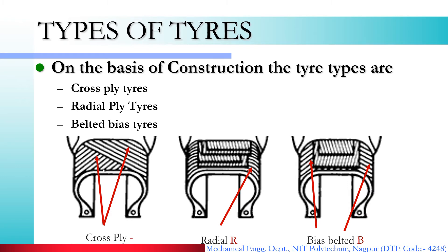The first is cross-ply, where the layers run at one angle and then at the opposite angle alternately. So this is cross-ply construction. The other type is radial ply. In radial ply, the ply runs in the radial direction — perpendicular to the circumference, at 90 degrees. This is how the ply is arranged in radial tire construction.